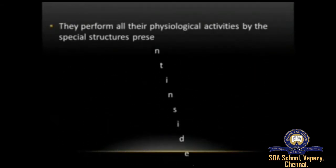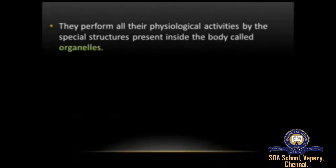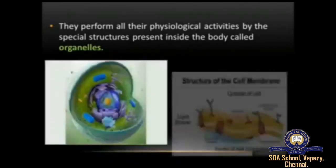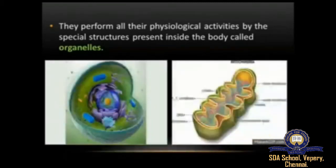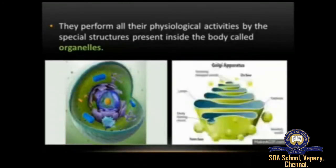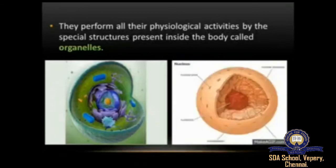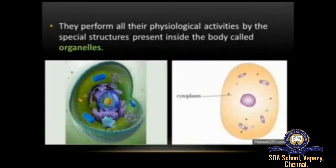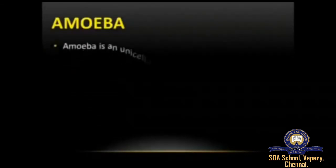Unicellular organisms perform all their physiological activities by means of special structures present inside the body called organelles. These organelles are present inside unicellular organisms and carry out all their physiological activities. Now we'll learn about amoeba — amoeba is a unicellular organism.